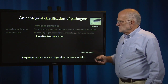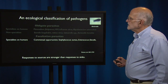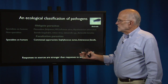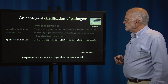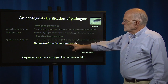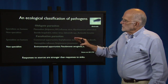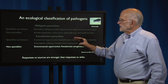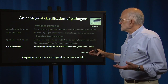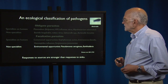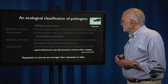There are also facultative parasites — things that can either be free-living or parasitic. Specialists on humans include commensal opportunists such as Staph, Enterococcus faecalis, Haemophilus influenzae, and Strep. Non-specialists that are facultative include environmental opportunists such as Pseudomonas aeruginosa, Burkholderia, Rhodococcus, and Mycobacterium marinum.